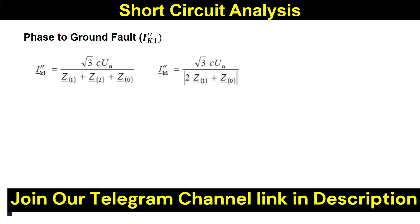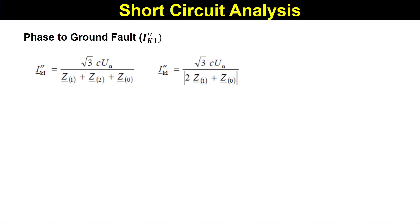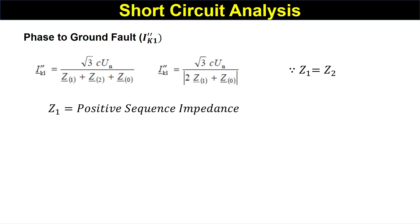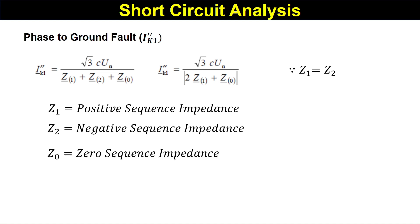First we will calculate the phase-to-ground fault, represented by I_k1 double dash. I_k1 double dash is equal to root three times c_un divided by Z1 plus Z2 plus Z0. Here Z1 equals Z2, so it becomes: I_k1 double dash equals root three times c_un divided by twice Z1 plus Z0, where Z1 is the positive sequence impedance, Z2 is the negative sequence impedance, and Z0 is the zero sequence impedance.